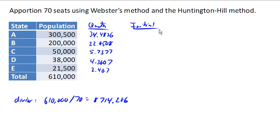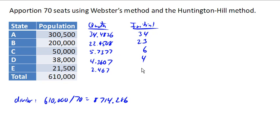In Webster's method, remember that we round each of these to the nearest value. So we'll round this to 34, this to 23, this to 6, this to 4, and this to 2.